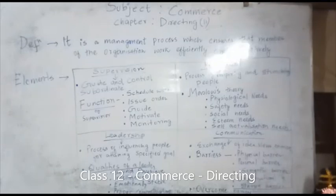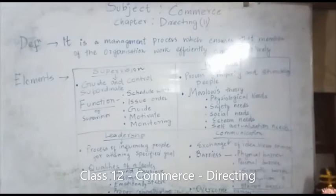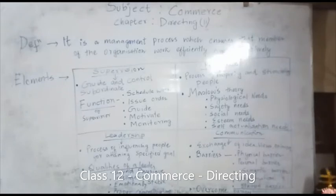The first element is Supervision. As I wrote the definition, supervision is a process of guiding and controlling the subordinate. Now who does that? The person who guides and controls the subordinate is called the Supervisor.